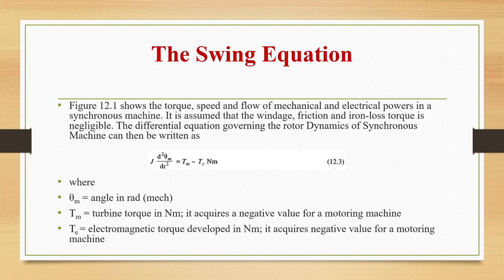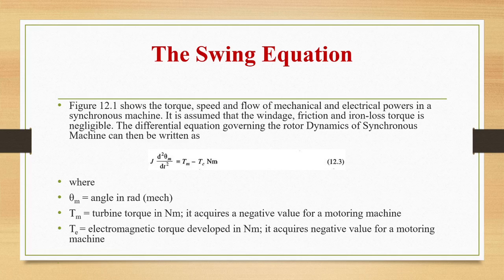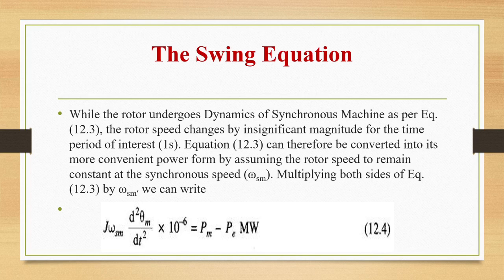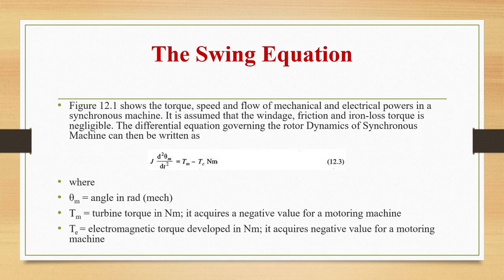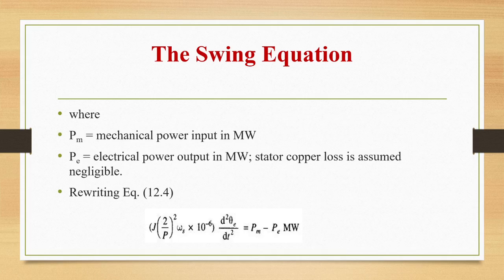This torque equation can be converted to a more convenient power form by assuming rotor speed remains constant at synchronous speed ωsm. Multiplying both sides by ωsm gives J·ωsm·d²θm/dt²·10⁻⁶ = Pm − Pe, where Pm is mechanical power in megawatts and Pe is electrical power in megawatts. Stator copper loss is assumed negligible. Substituting ωs = (p/2)·ωsm and the expression for M, we obtain M·d²θe/dt² = Pm − Pe in megawatts, where θe is the angle in electrical radians.